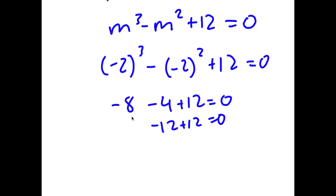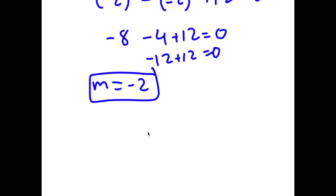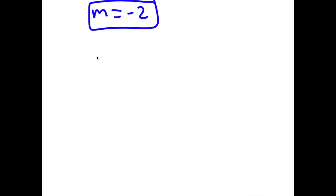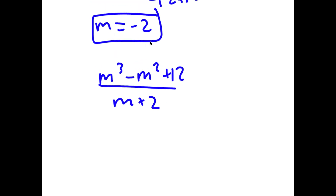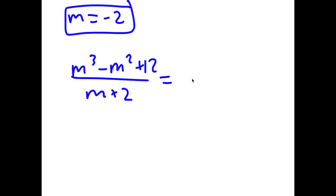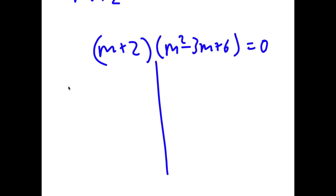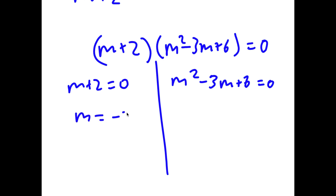Now that I know negative 2 is a solution, I can use this to find the rest of the solutions by dividing my equation m to the power of 3 minus m squared plus 12 by m plus 2, because m plus 2 corresponds to m equals negative 2 being a solution. This gives m squared minus 3m plus 6. So now we have m plus 2 times m squared minus 3m plus 6 equals 0, giving us two equations: m plus 2 equals 0 — from which we already know m equals negative 2.